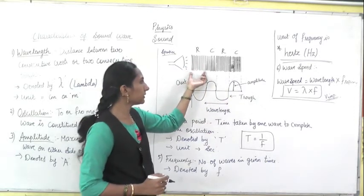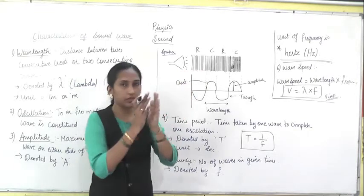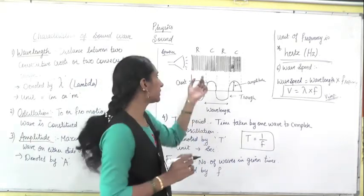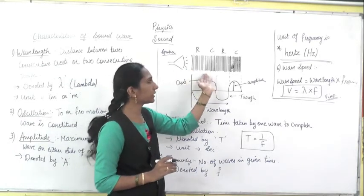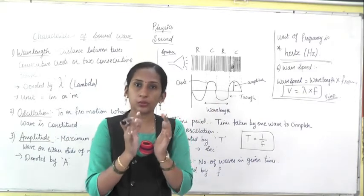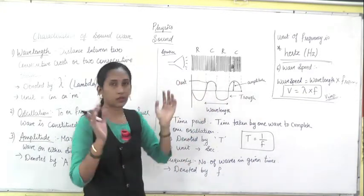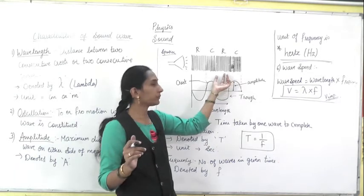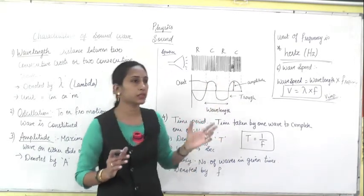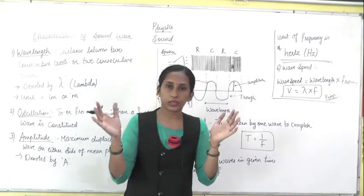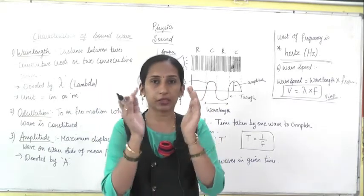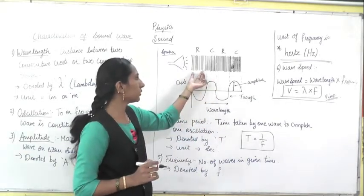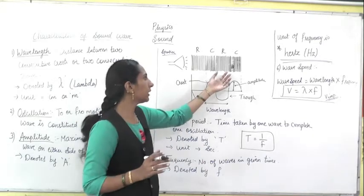Now here you can see the density of the air molecules. You can see they are apart — there is more space in between, so the density is less here. Density of air molecules is less compared to this compressed region. Compressed means more air particles have come together. When it compresses again, it becomes a low density region. High density means more air particles come together; low density means they go away.